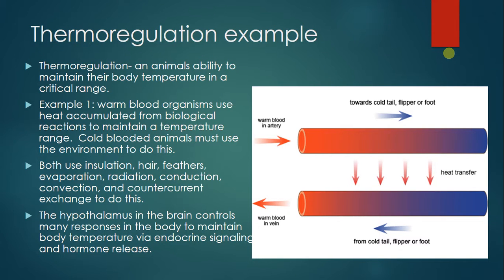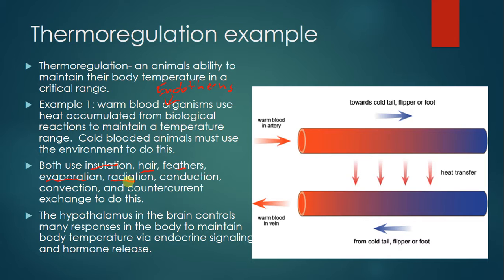Thermoregulation is an animal's ability to maintain body temperature within a critical range. Warm-blooded organisms, or endotherms, use heat generated from biological reactions like digestion. Cold-blooded animals must use the environment—heat radiated from the sun, conducted through a warm stone, or convected from the atmosphere. Warm-blooded individuals use mechanisms like insulation from fat, hair, feathers; evaporation through sweat; radiation; conduction; and counter-current exchange, where warm arterial blood exchanges heat with cooler venous blood because arteries and veins run close together.